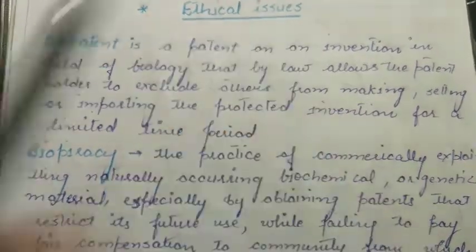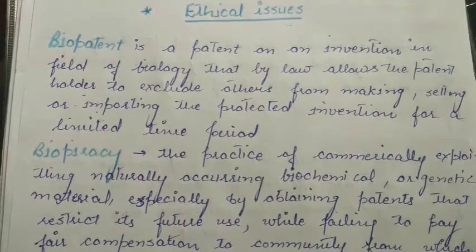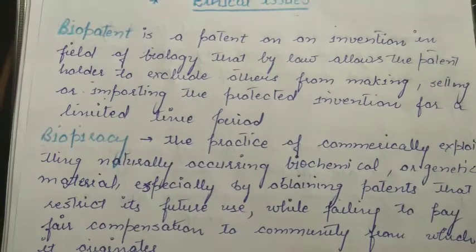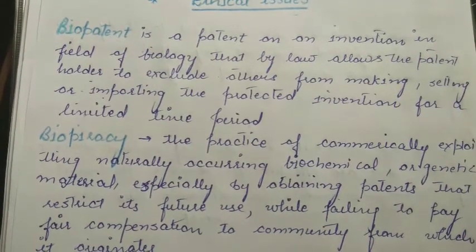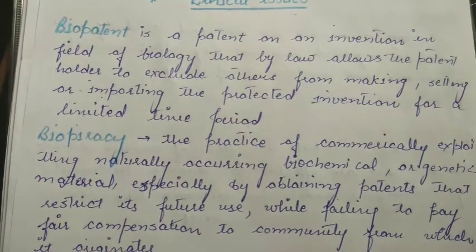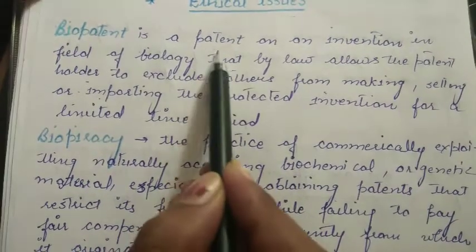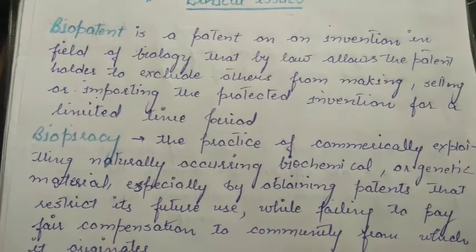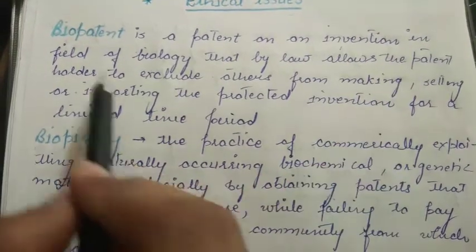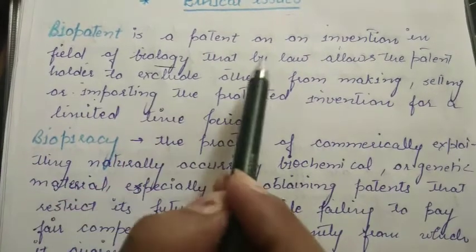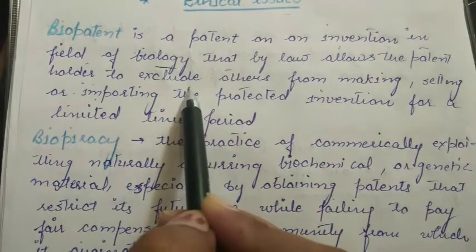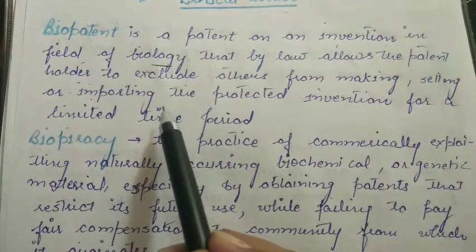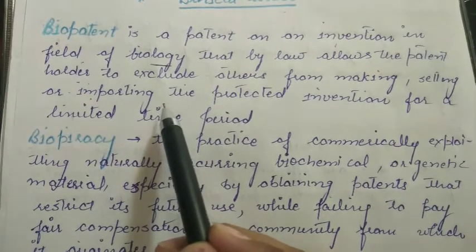There are some important terms. First is biopatent. A biopatent is the patent, reward, or recognition given to any person who produces a product or invention in the field of biology. The patent allows the inventor to have exclusive benefits from their invention for a limited time period. After the time period expires, the patent ends and the benefits of the new product go to the inventor or provider.